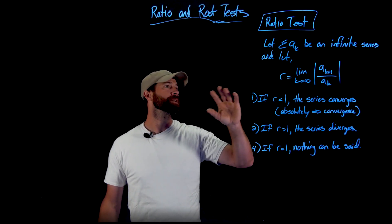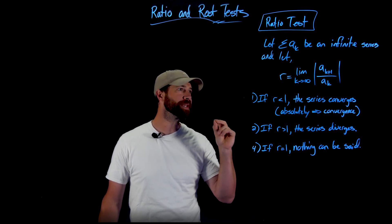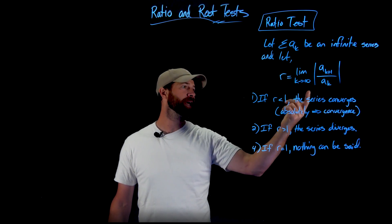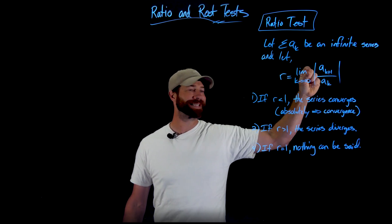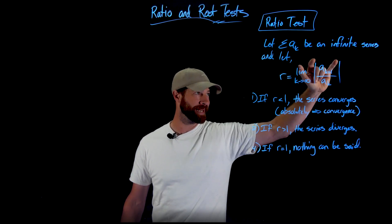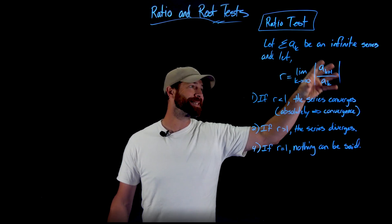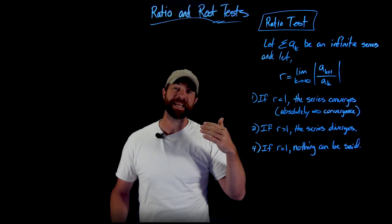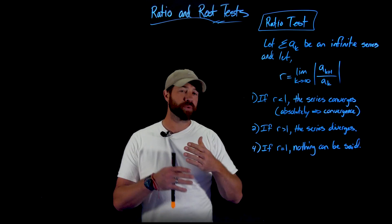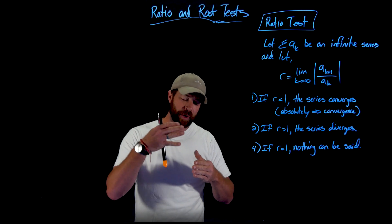What the ratio test says: we have this infinite series described by these a sub k's, and we're going to define r. So r is this ratio for the ratio test. We let the limit as k goes to infinity, and what we're doing is dividing succeeding terms — a of k plus one divided by the previous term — taking the absolute value to restrict r to a positive value. What this r value will be, if it exists, is that for large enough k, the ratio between successive terms has this common ratio between them.